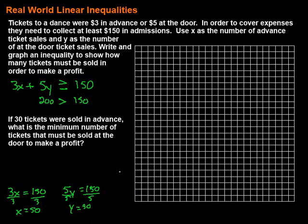Now I have a grid here — let's think about this for a second. Are there any values that don't make sense for either x or y? Well, negative values don't make sense because we can't sell negative tickets. So what we're going to do is focus in on the first quadrant. The other parts of our coordinate plane don't apply because those values don't make sense for our problem.